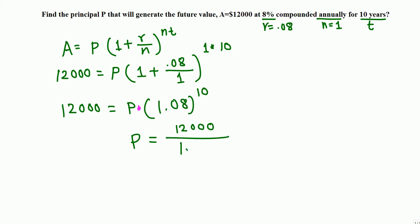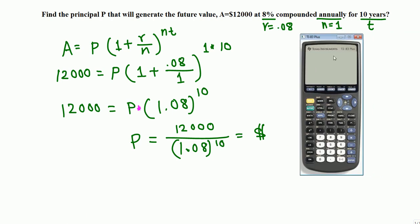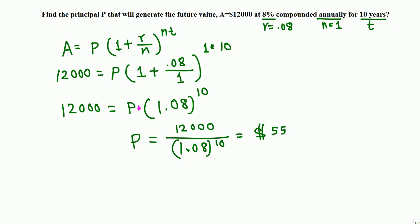Use your calculator and get the answer. So we have here $12,000 on the top, divided by parenthesis 1.08, close the parenthesis, raised to 10, and enter. We get $5,558.32 final.